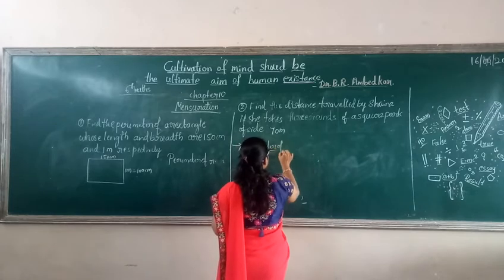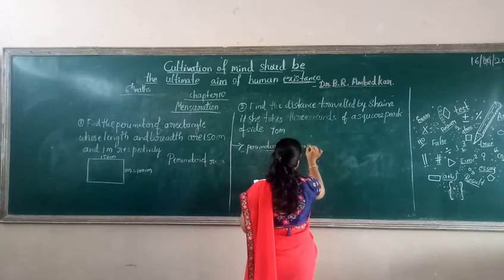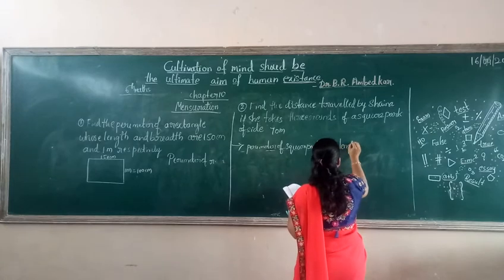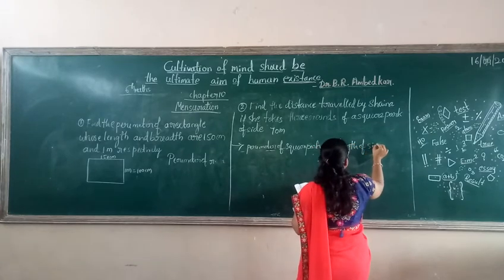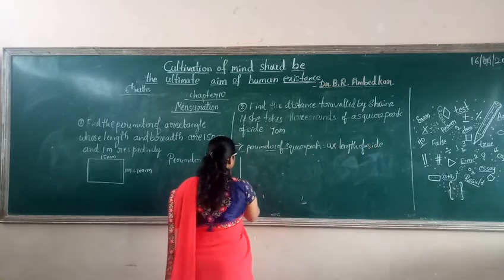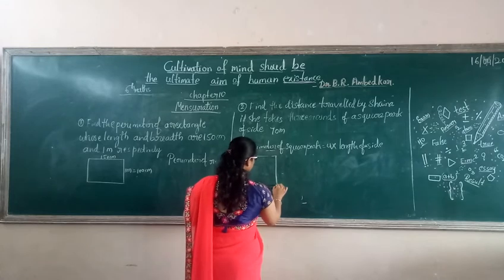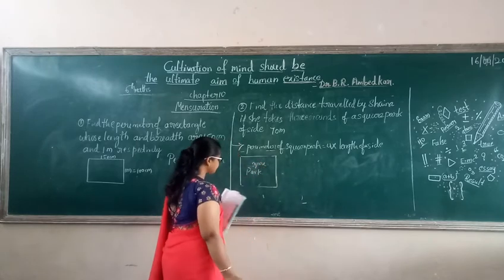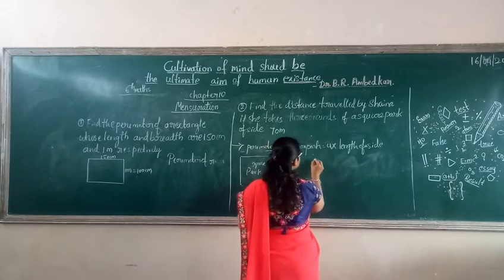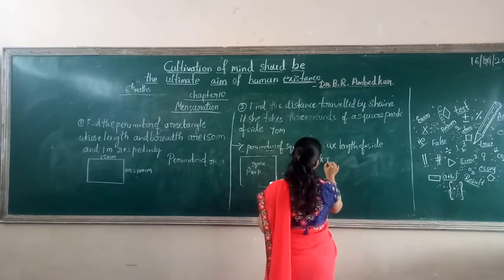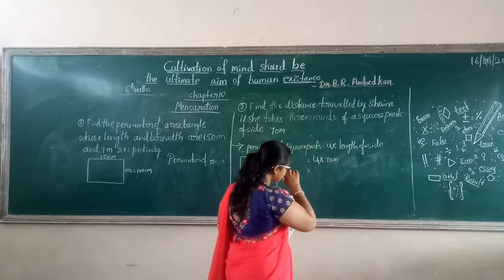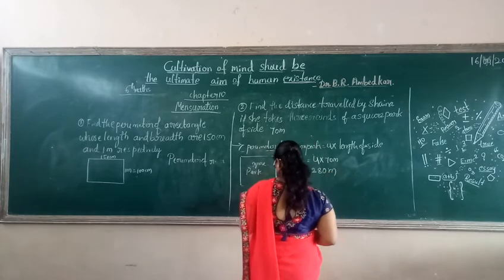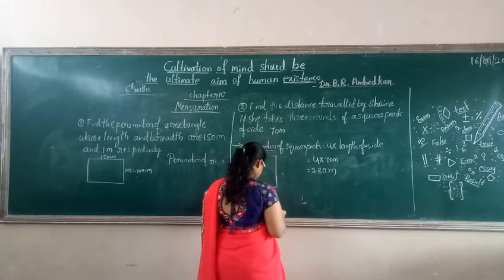Perimeter of the square park equals 4 into the length of one side. We need to find one side — this is the square park. Four into how much? Seventy metres. So 4 into 70: four sevens are 28, that is 280 metres.